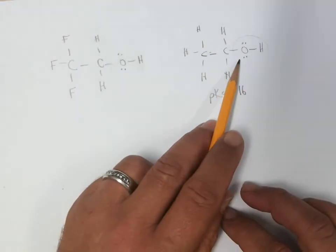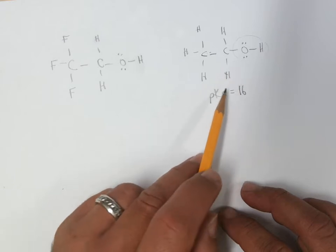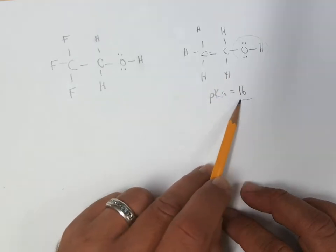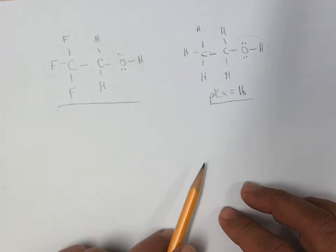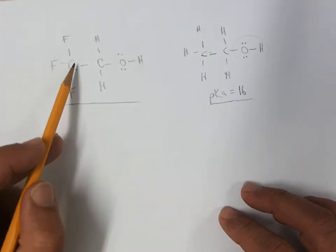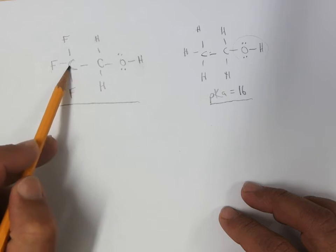So what we're asking ourselves is what's the difference between ethanol, which we're very familiar with, pKa is 16, and trifluoroethanol. 2,2,2-trifluoroethanol means the three fluorines are on the second carbon.